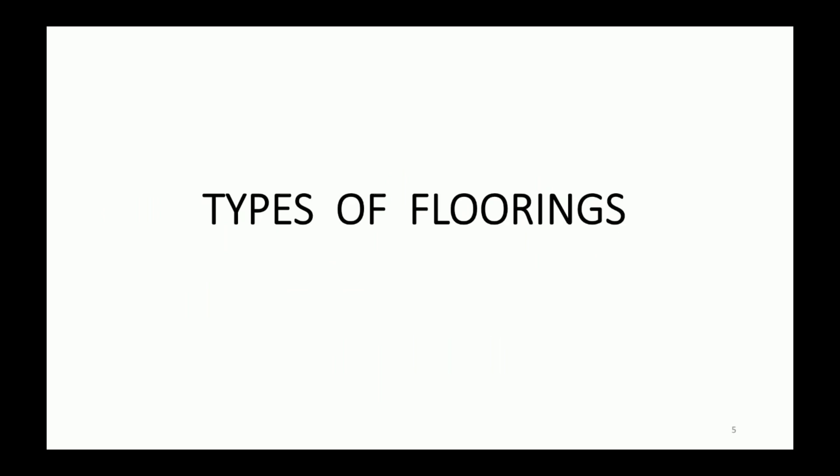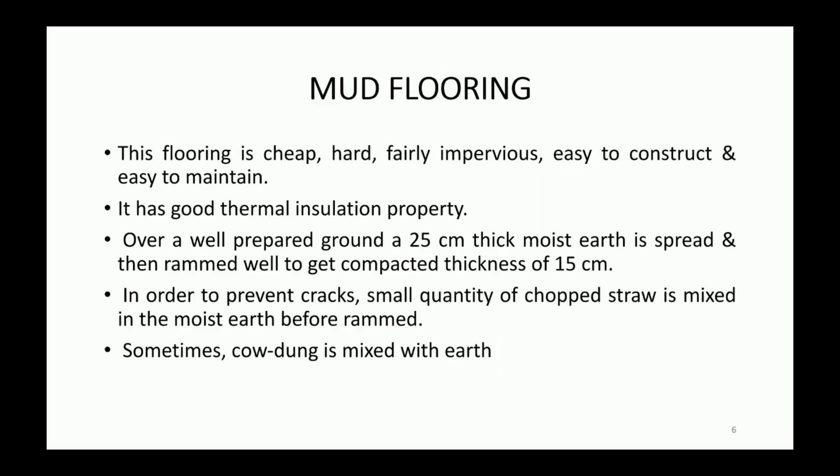Now let's discuss types of flooring. The first category is mud flooring. This flooring is cheap and easy to construct and maintain, and has good thermal insulation properties. The construction involves spreading a 25 cm thick moist earth layer over a well-prepared ground, then ramming it well to get a thickness of 15 cm. To prevent cracks, chopped straw or cow dung can be added.